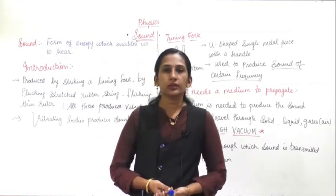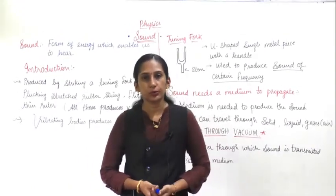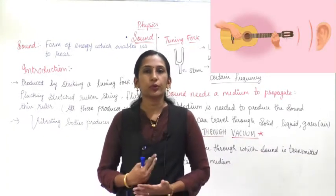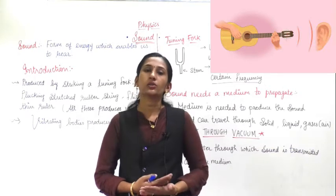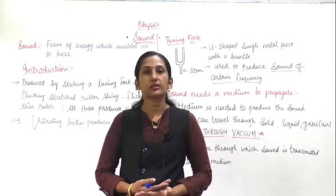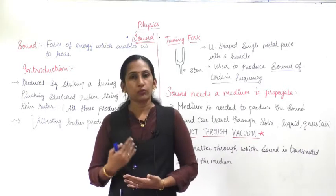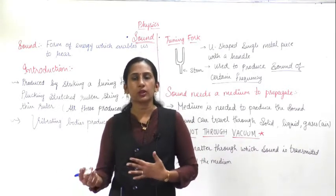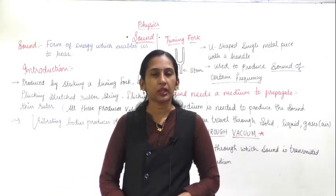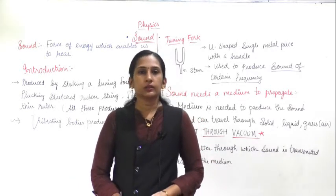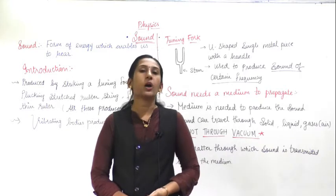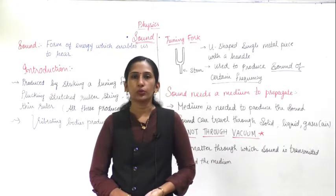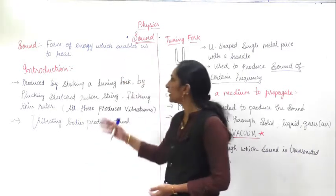How is sound produced? There are many musical instruments and things which can produce sound. In your house, utensils and vessels also produce sound. Our vocal cords also produce sound. If anything falls down, you can also hear the sound of the object falling. So how is sound produced? That is what you are going to study in this lesson.